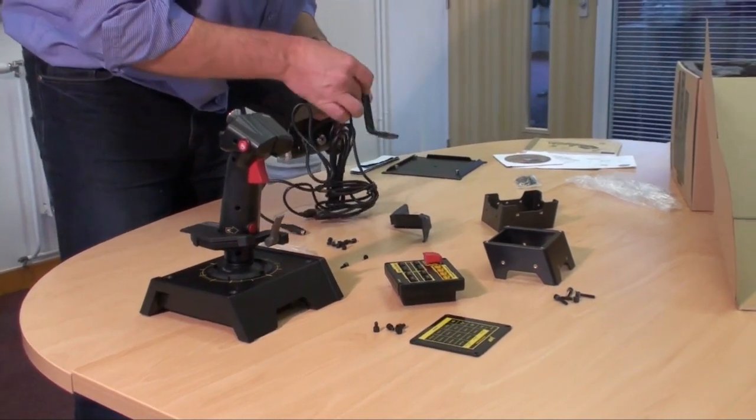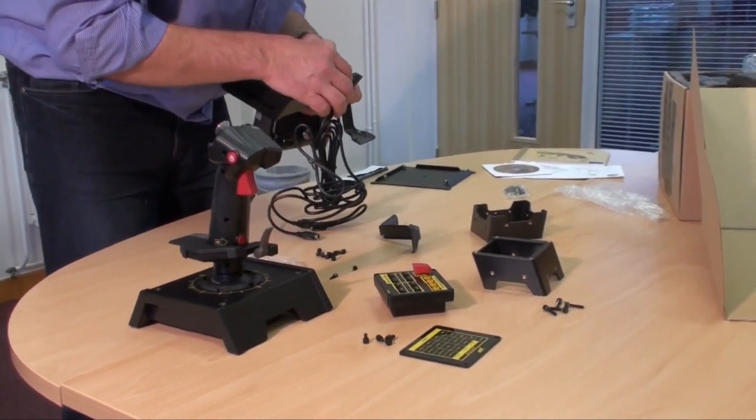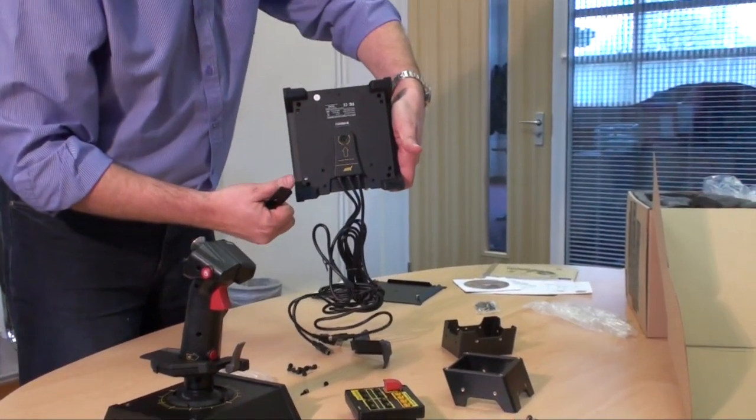That's what we're doing now. We're just putting the brackets on the underside of the throttle. As you can see, there's already pre-drilled holes.